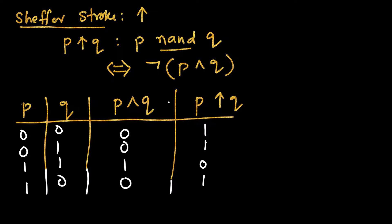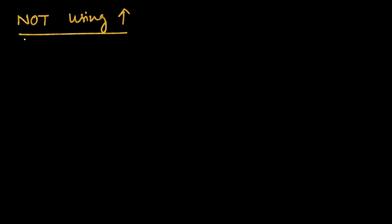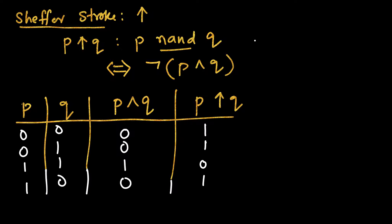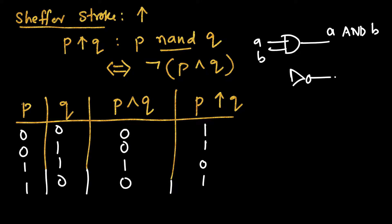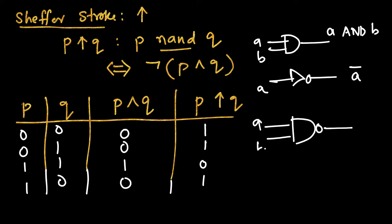Now, using the Sheffer Stroke, let's implement NOT. If you remember from your digital circuits class, this was the symbol for AND — if you have A and B, the output is A AND B. This was the symbol for NOT — if the input is A, the output is NOT A. Combining these, we get the NAND gate. If the inputs are A and B, the result is NOT(A AND B), also written as AB with a bar.